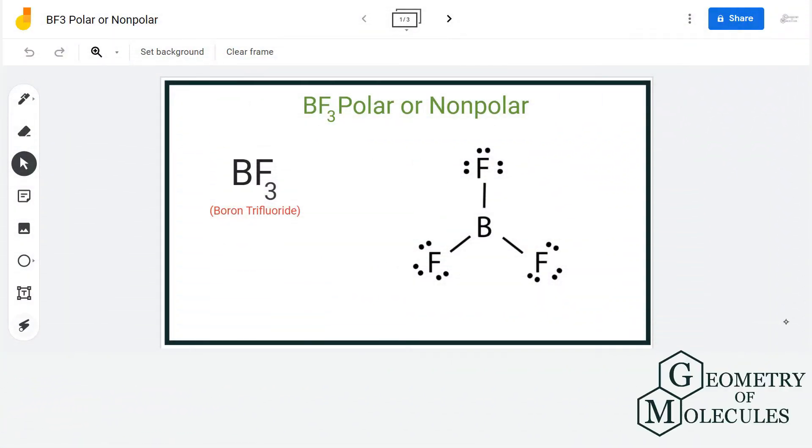In this video, we are going to determine the polarity of BF3 molecule. It's the chemical formula for boron trifluoride and is made up of one boron atom and three fluorine atoms. To understand its polarity, we